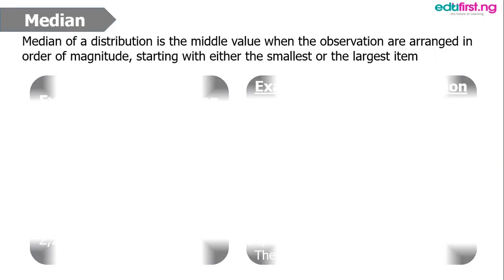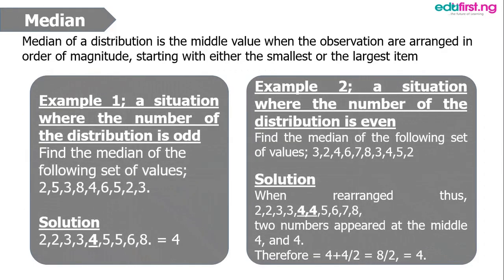The concept of median: the median of a distribution is the middle value when the observations are arranged in order of magnitude, starting with either the smallest or the largest item. Example 1 shows a situation where the number of items in the distribution is odd.